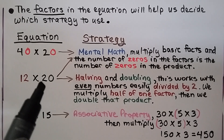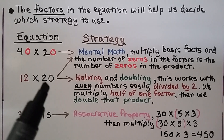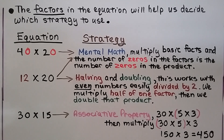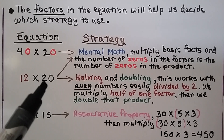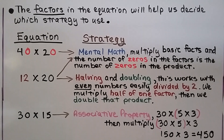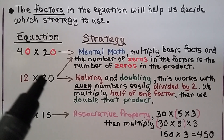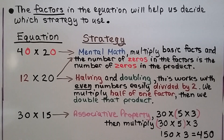For 12 times 20, we could use halving and doubling, and this works with even numbers. 12 is an even number, and 20 is also easily divided by 2. Half of 12 is 6, and 6 times 20 is 120. Then we double the product to get 240. We can also use mental math: 2 times 12 is 24, and we put one zero in the product to get 240. So we could use either strategy with that one.